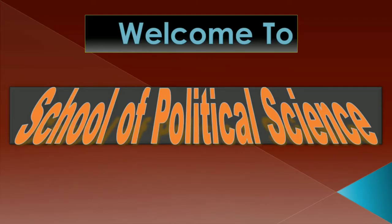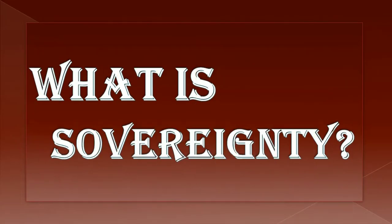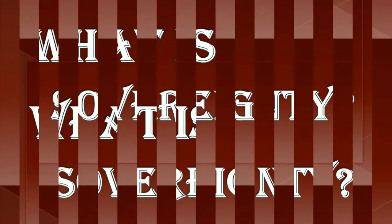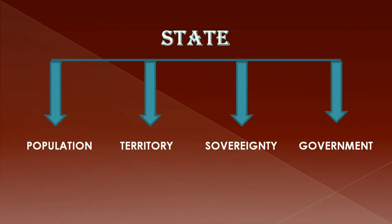Hello friends, welcome to School of Political Science. In this video I will discuss with you about the concept of sovereignty. We all know that there are four essential features of a state: the first one is population, the second one is territory, the third one is sovereignty, and the fourth one is government.